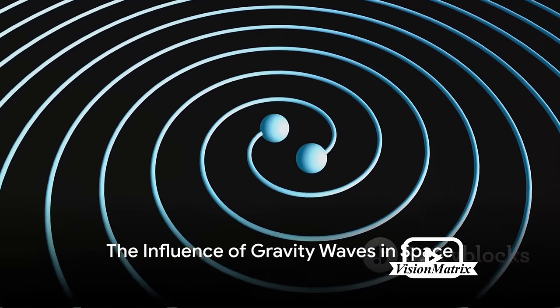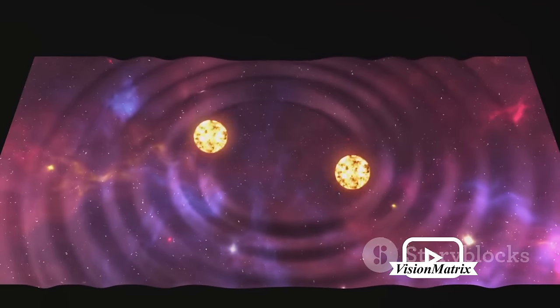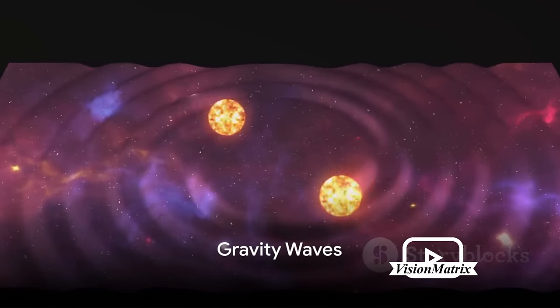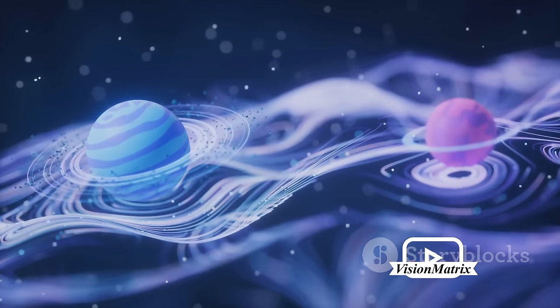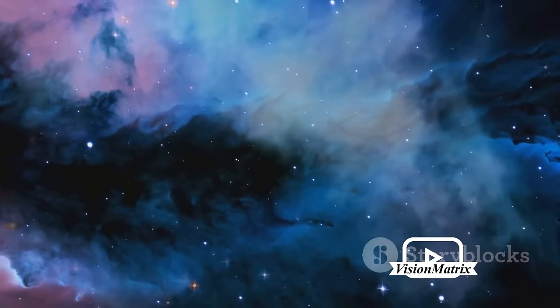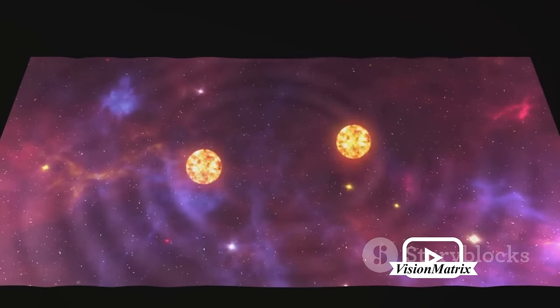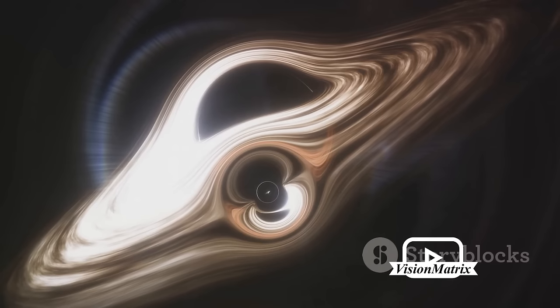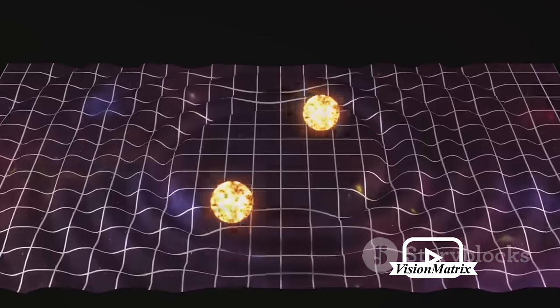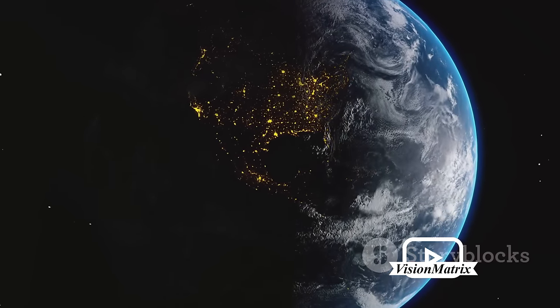Gravity, the force that keeps us grounded, also plays a significant role in the cosmos. Imagine gravity as a vast cosmic sea. When massive objects like black holes or neutron stars accelerate or change direction, they create ripples in this sea, much like a stone tossed into a pond. These ripples, my friends, are what we call gravity waves. Now, these waves are not visible to the naked eye, but they carry with them crucial information about the cataclysmic events that created them. They can travel across the universe undisturbed and unaltered, providing us with a unique glimpse into the very heart of these celestial events. But their influence goes beyond mere observation. Gravity waves can cause minute distortions in space-time, affecting the movement and position of celestial bodies. They subtly shape the universe, influencing the orbits of planets, the formation of galaxies, and even the trajectory of light itself. Gravity waves are the universe's silent movers, shaping and influencing the cosmos in ways we're only beginning to understand.